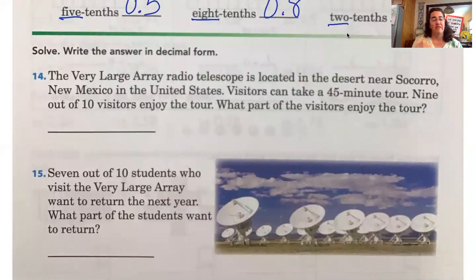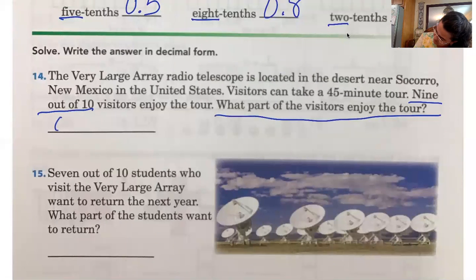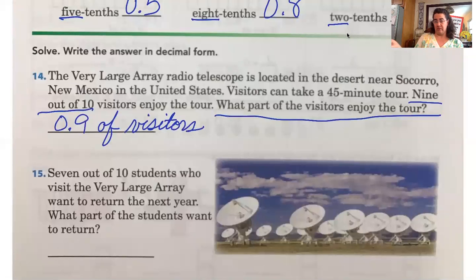Here we go. Now the Very Large Array radio telescope is located in the desert near Socorro, New Mexico in the United States. Visitors can take a 45 minute tour. Nine out of ten visitors enjoy the tour. What part of the visitors enjoy the tour? So friends the question we're answering is what part of the visitors enjoy the tour? It says nine out of ten. What is nine tenths? How would I write that? Max. Zero point nine. So nine tenths of visitors. Good job because visitors is our unit.